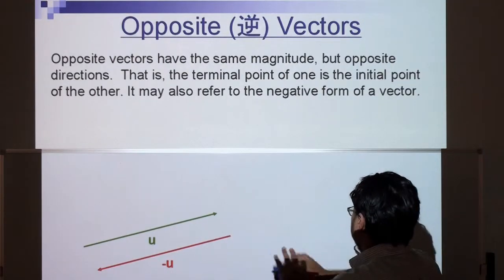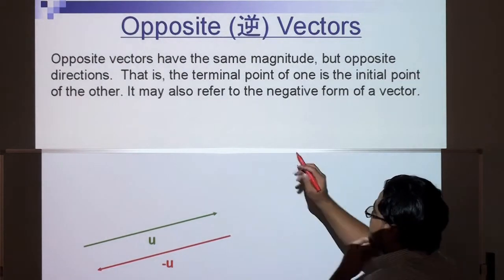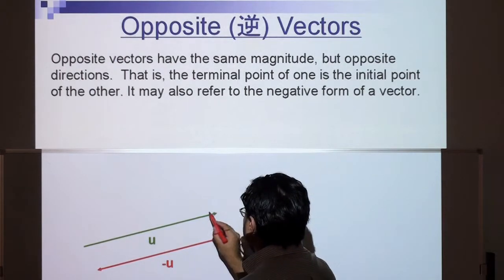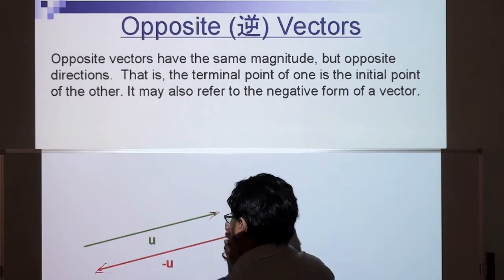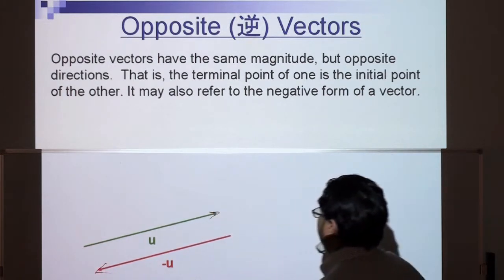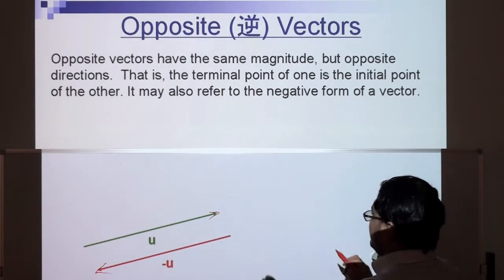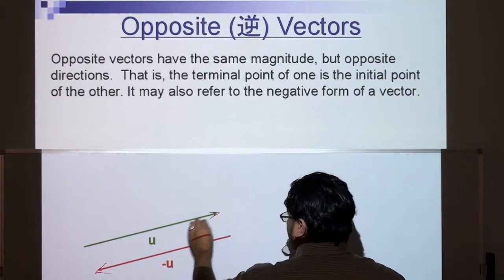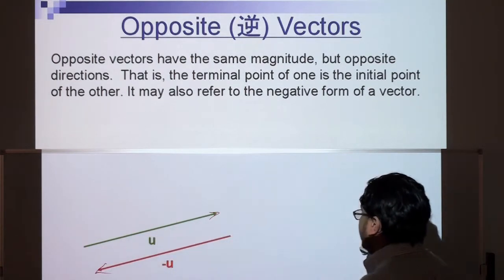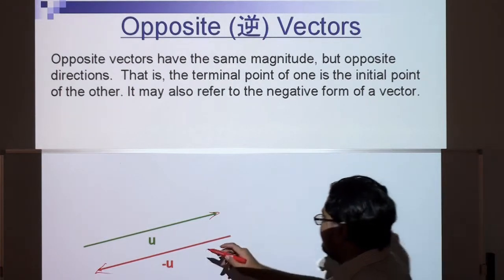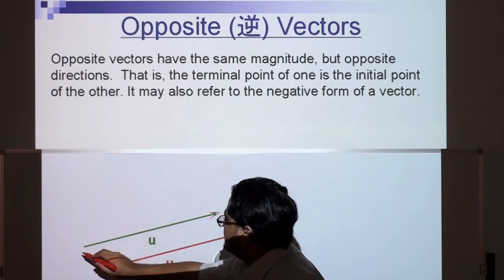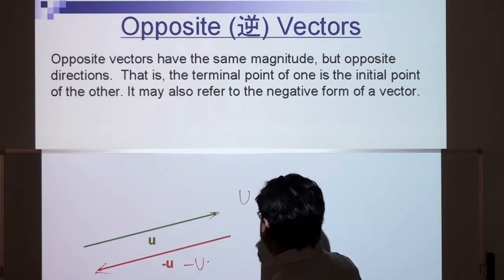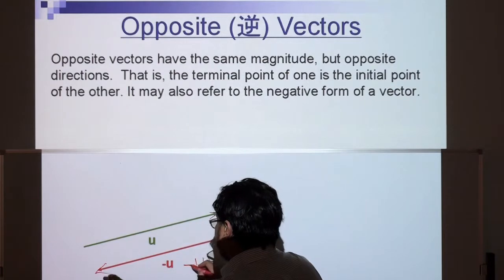Now we have something called opposite vectors. Opposite vectors have the same magnitude but opposite direction. That's pointing that way and that's pointing that way, even though they have the same magnitude. In other words, the terminal point of one is the initial point of the other. It also may refer to the negative form of a vector, so say that's u and this becomes negative u. When you change the direction, you put a negative sign.